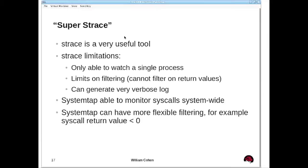SystemTap works as a super strace because strace has limitations: it can only monitor a single process, has limits on filtering, and can't filter on return values — so if you want to pay attention only to things returning error conditions, strace doesn't allow that. You may end up with a very verbose log file requiring post-processing. SystemTap allows system-wide monitoring, so if there's interaction between two processes you can look at system calls on both and correlate them by timestamp, and you can do more flexible filtering including on return values.